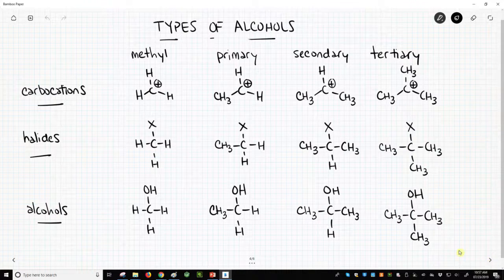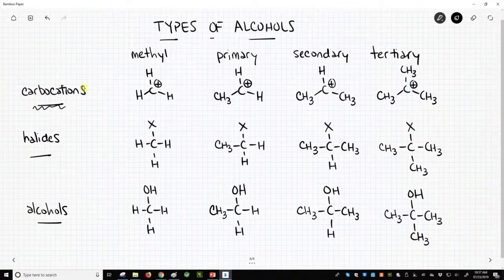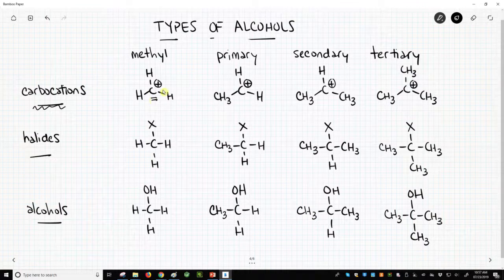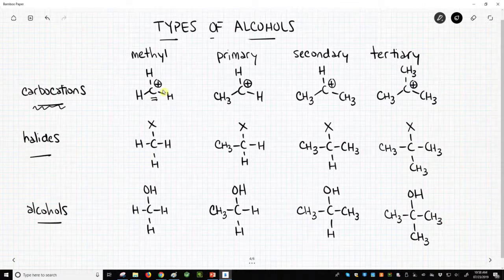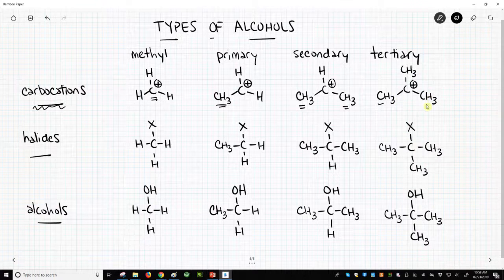If you notice on the top row, we mentioned carbocations. We have methyl, primary, secondary, and tertiary carbocations. The identity of the carbocation is determined by how many carbon groups we have on our central carbocation carbon. If we have none, it's a methyl. If we have one, it's primary. Two, it's secondary. And three, it's tertiary.